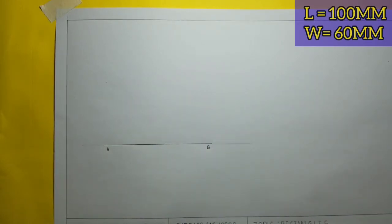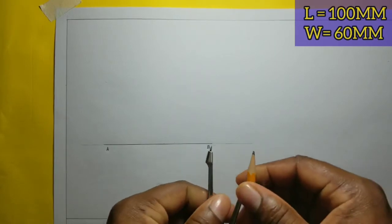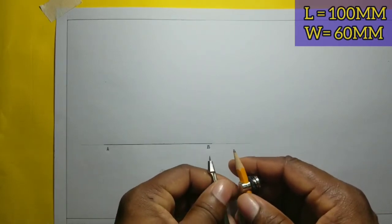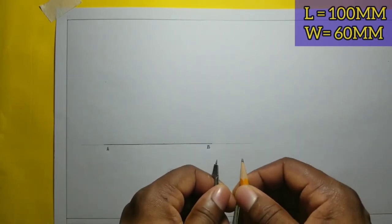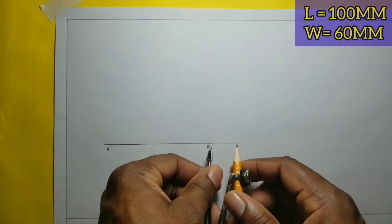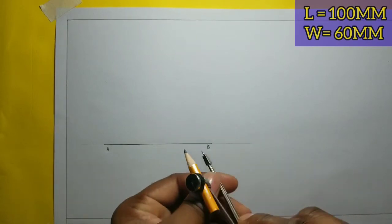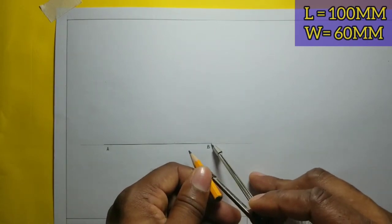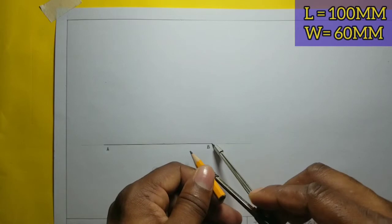I will now open my compass to a small convenient radius, and with the center at B I will scribe a semicircle from the AB line.